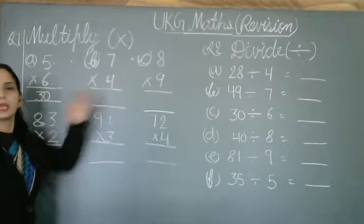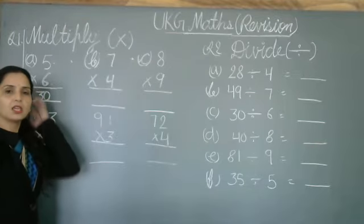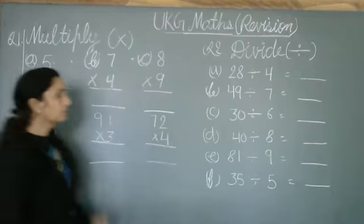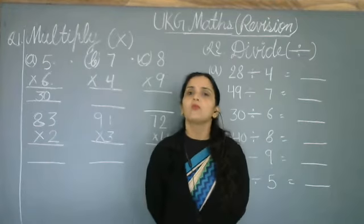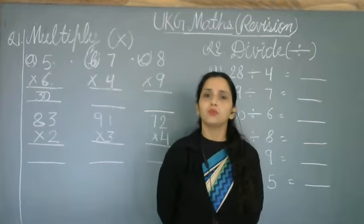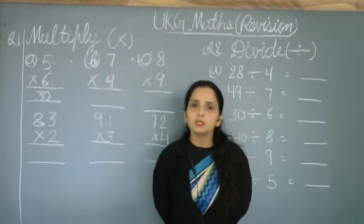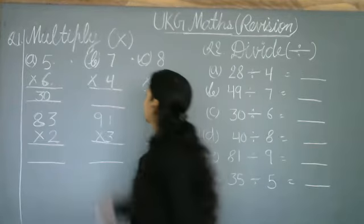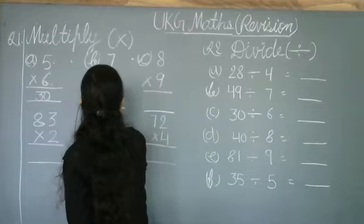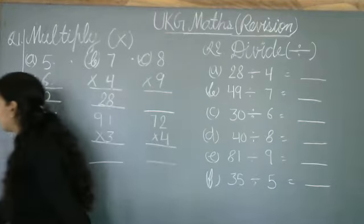4 times 7. How do we write the 4 table? 4 times 1 is 4, 4 times 2 is 8, 4 times 3 is 12, 4 times 4 is 16, 4 times 5 is 20, 4 times 6 is 24, 4 times 7 is 28.